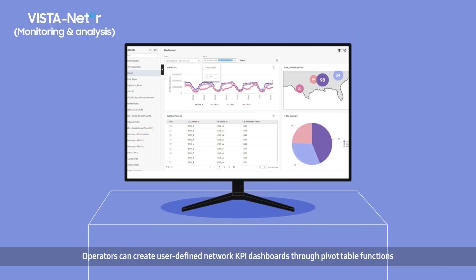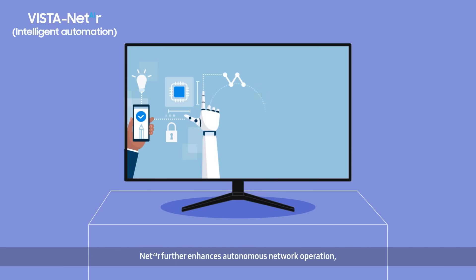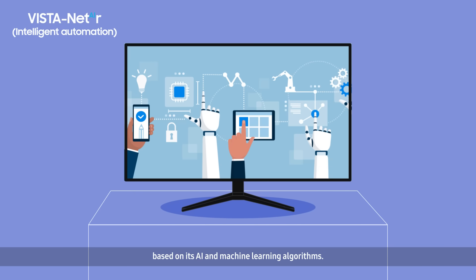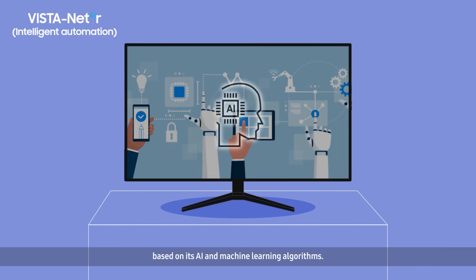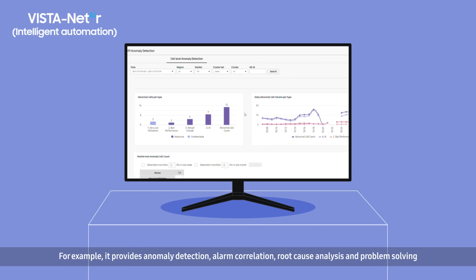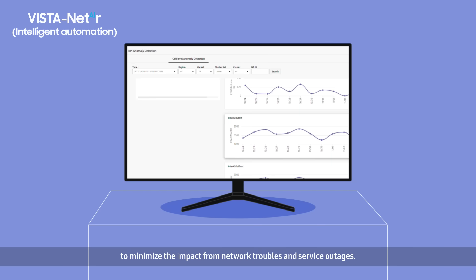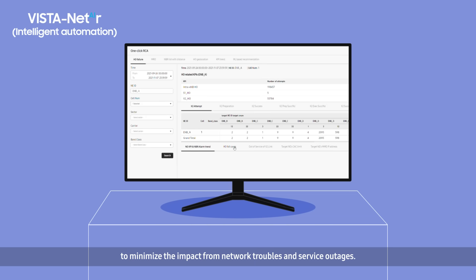it is easy to visualize the analysis results with holistic and multi-dimensional views. Operators can create user-defined network KPI dashboards through pivot table functions and share the KPI reports whenever they want. NetAir further enhances autonomous network operation based on its AI and machine learning algorithms, providing anomaly detection, alarm correlation,